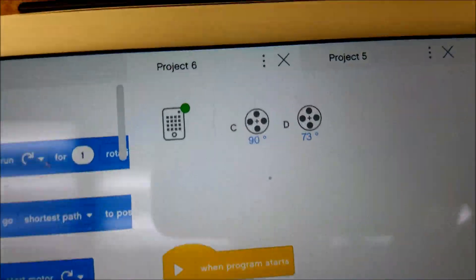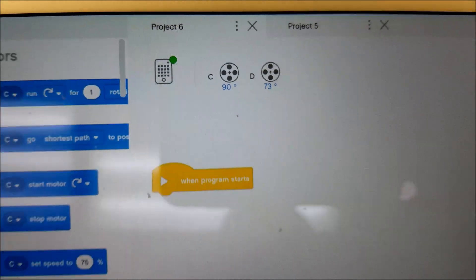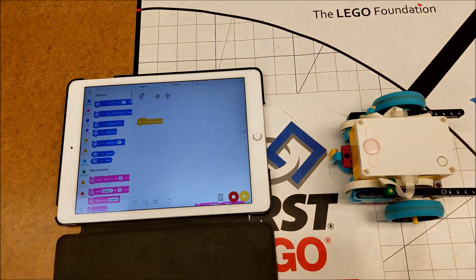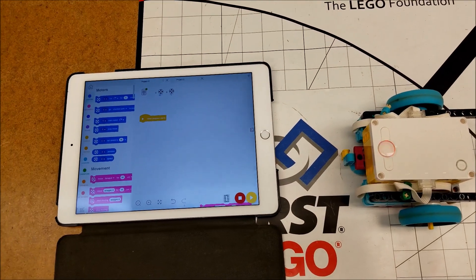When you see that green dot, that means you are connected. So let's go ahead and just go over how you make this robot go forward for those of you that are just like, I just want this thing to move.